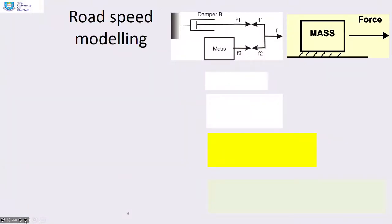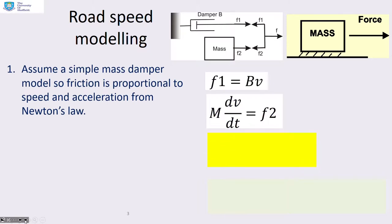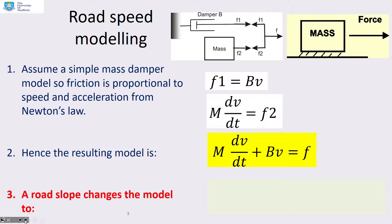Road speed modelling. We're going to assume a simple mass damper model, as illustrated in these two figures at the top. Friction force is B times velocity, B is some constant. Mass times acceleration is some force—that's Newton's law. If we combine those two together, we get the model for the car: M dV/dt plus BV equals F, the overall force on the road. Now, if there's a road slope, the model changes slightly. We end up with this extra term minus Mg sin θ alongside the force.